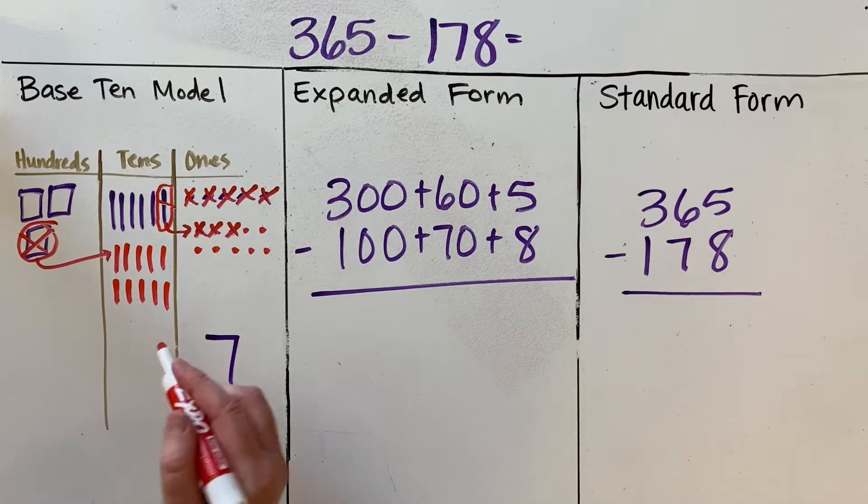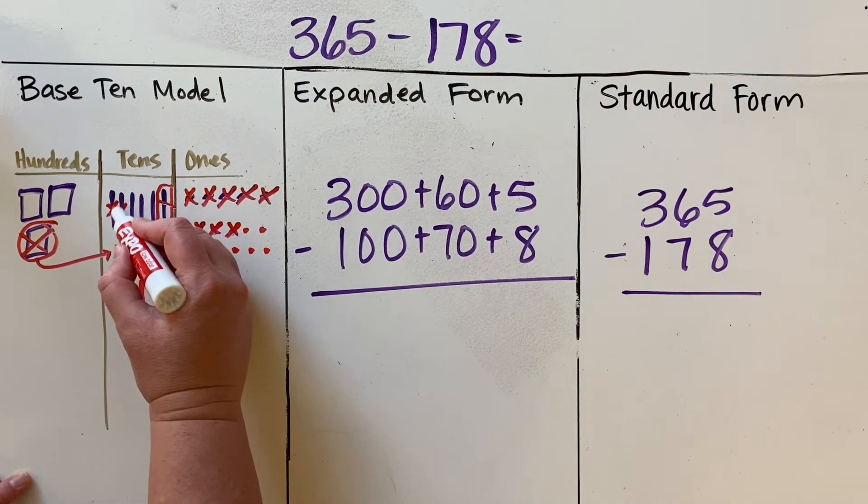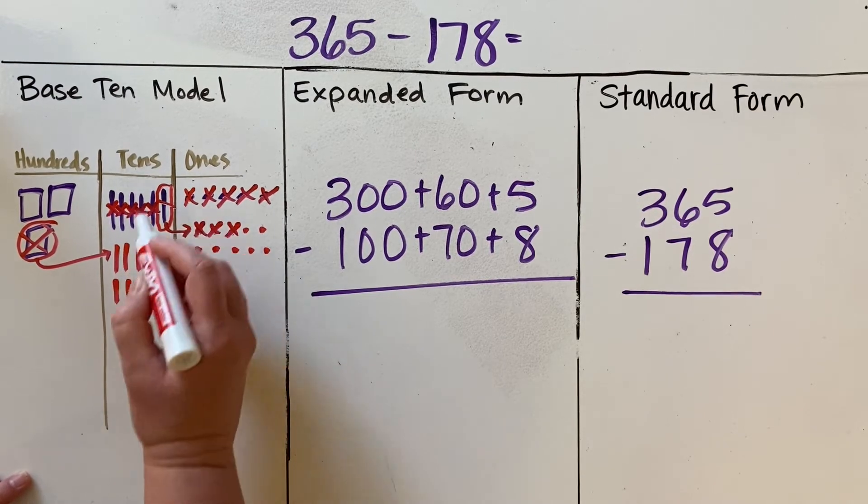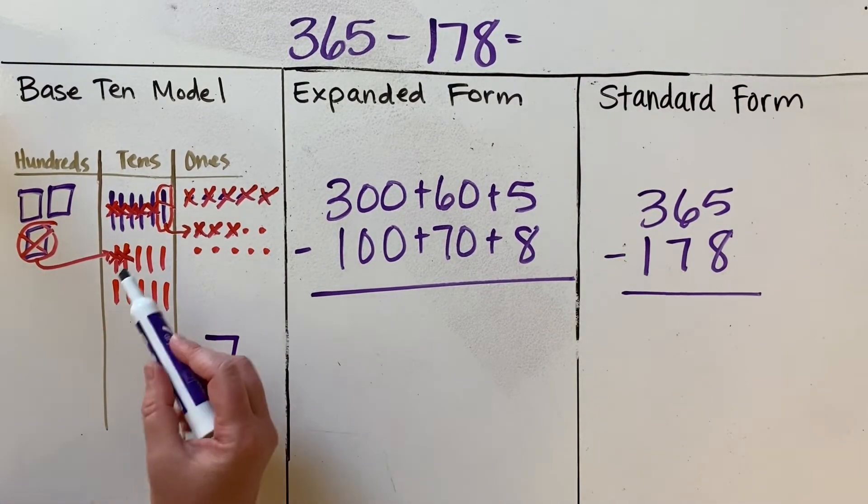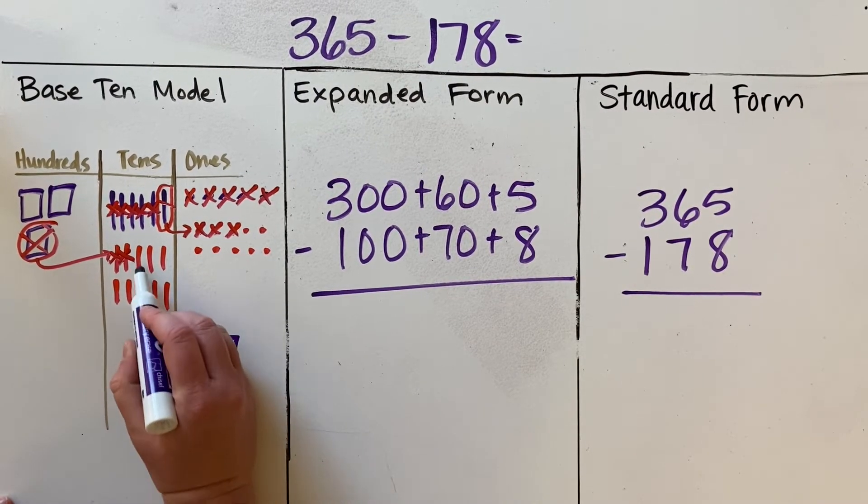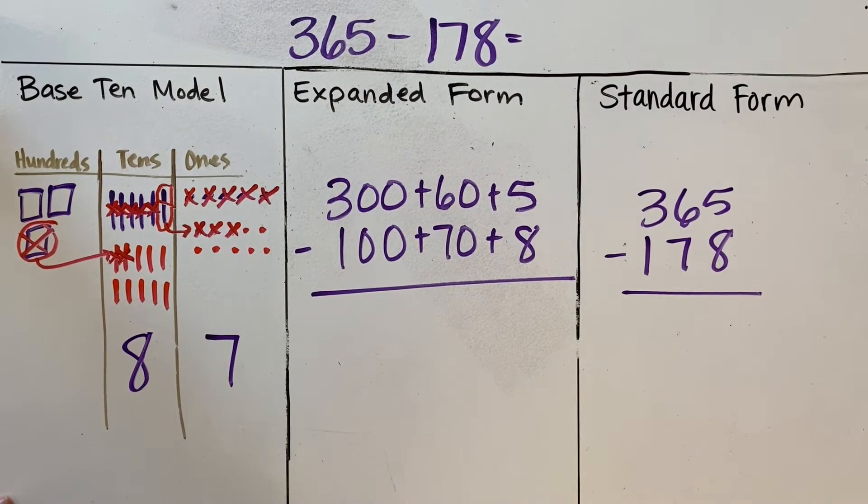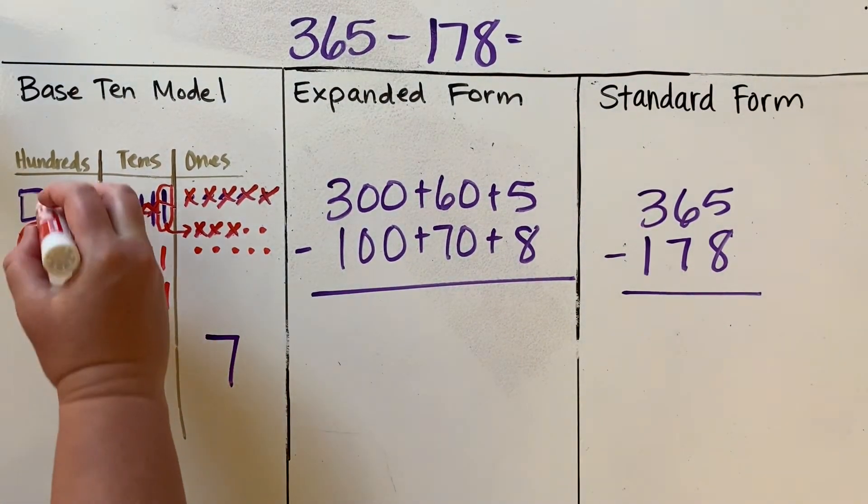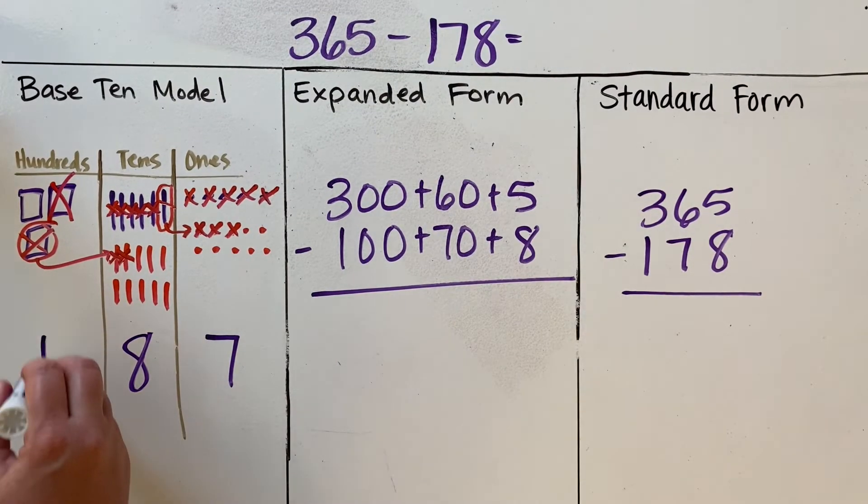So that 100 has been regrouped over here into the tens place. And now I can subtract seven tens: one, two, three, four, five, six, seven. And I can see how many are left over—five, six, seven, eight—eight tens left over. Now if I subtract 100, that leaves me with just 100.